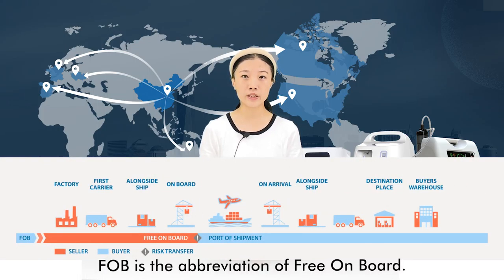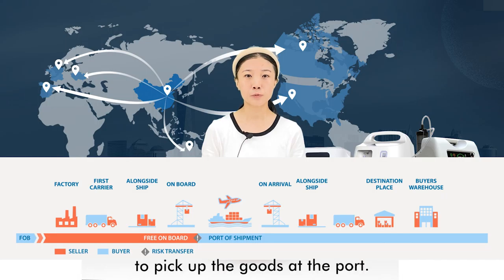FOB is the abbreviation of free onboard. The supplier pays all costs for shipping the product to a Chinese seaport or airport and pays for the export. You just need to find your own freight forwarder to pick up the goods at the port.